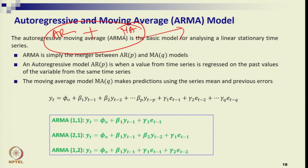In the AR process, we select the actual past lags of time series data and forecast through a regression model using autodata. In the MA process, we consider the past error terms with the mean data and forecast the weighted average of those error terms. These two are two different concepts.